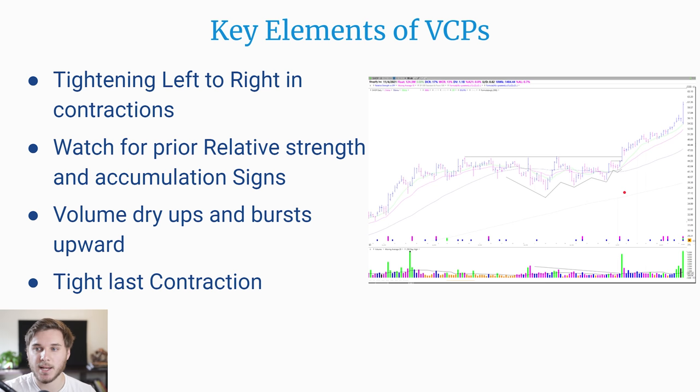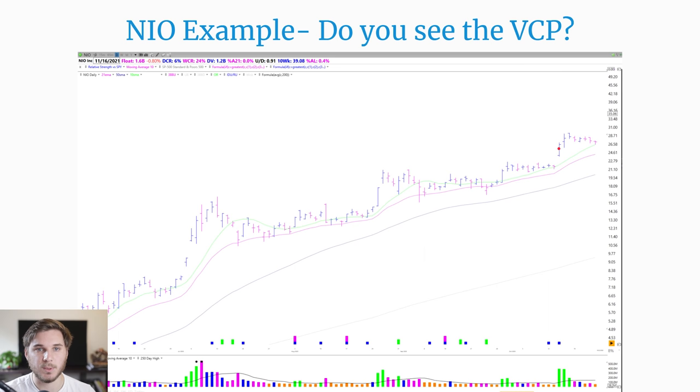You also want to see a very tight last contraction — ideally less than 10% from the prior high to the low of that contraction. This shows that the sellers have really dried up and been absorbed, and the stock is basically ready to make a large directional move if that demand comes in as shown by the volume. The tighter the last contraction, the tighter you can manage risk if you're using that swing low as your stop loss.